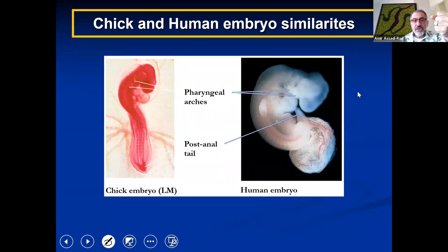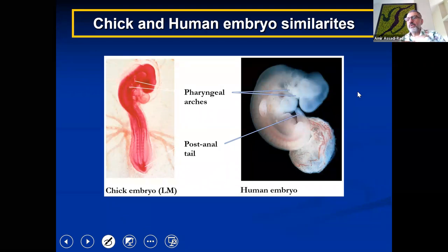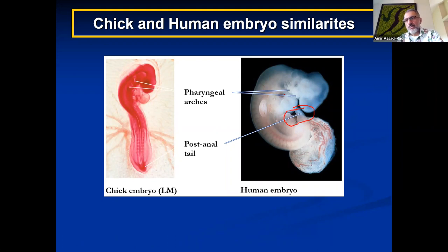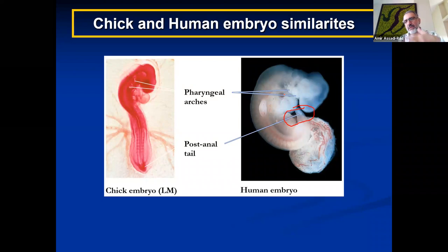Another aspect of homology: if you look at a human embryo and a chick embryo, they both have a post-anal tail. When we were in our mother's womb we did have a post-anal tail, but right now it's reduced to the coccyx. We also had pharyngeal gill slits in the womb, but now we have lungs. And at embryonic stages we have a notochord, but right now we have the vertebral column — same as chicks, which also have a notochord as embryos.